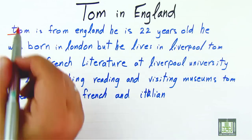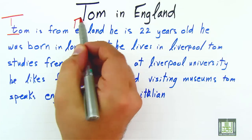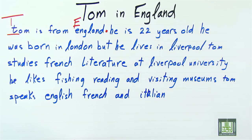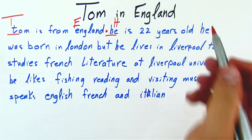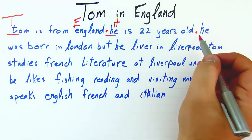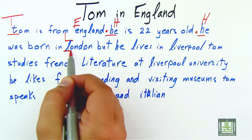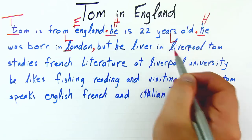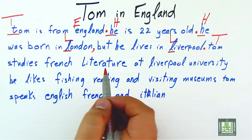Tom, as you know, is a proper noun and it must be capital T. Tom is from England — also 'England' is the name of a country so it must be capital E — and the sentence has finished, so we have a full stop to indicate the end of the sentence. Now we start a new sentence: 'He is 22 years old.' Also full stop. We start with capital H because it's a new sentence. 'He was born in London' — again capital L. And we have a comma before 'but.'